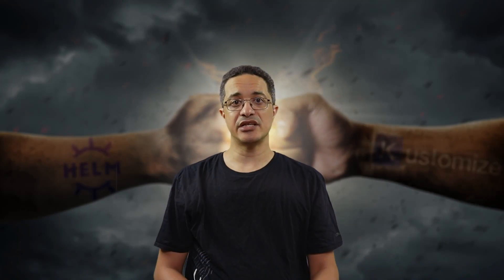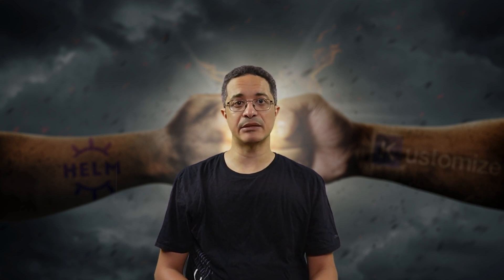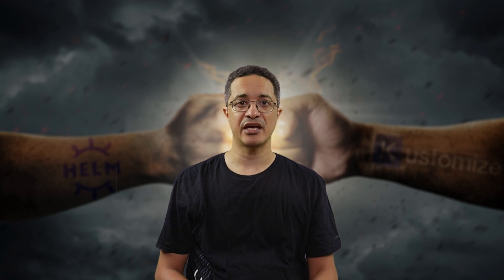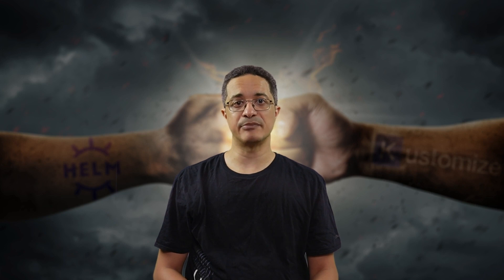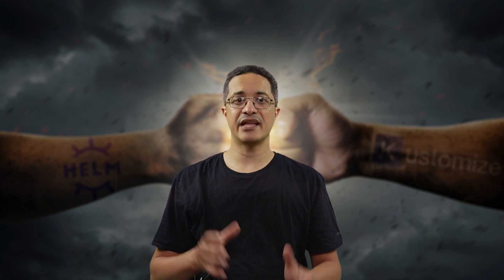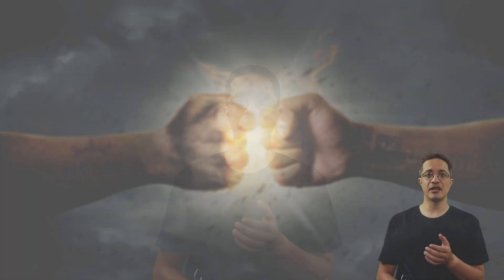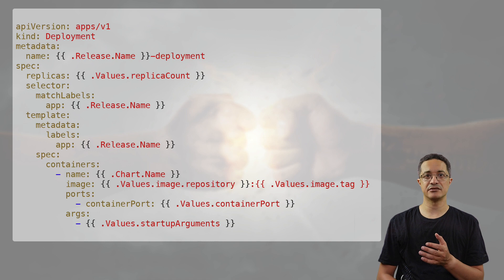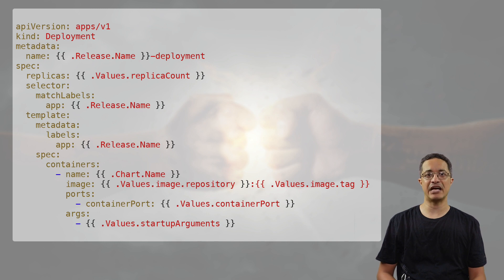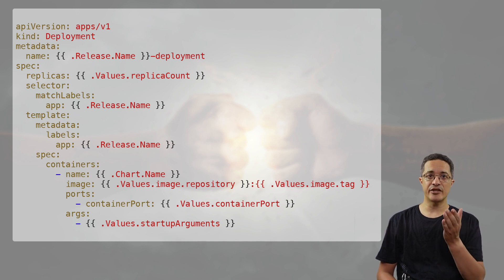Helm — regarded as the Kubernetes Package Manager — provides a way to package, distribute, and manage applications as charts. A Helm chart consists of a collection of templates and values files, where templates define the Kubernetes resources, for example deployments, services, and config maps, and values files allow you to customize the template values. This way, you can have a set of templates with placeholders for parameters that change from one deployment or environment to the other. For example, a Helm deployment template can take the replicas count, image name and tag, container port, and container startup arguments from a values file. Anything between the double curly braces is dynamic — it gets replaced with the actual values when the chart is deployed.